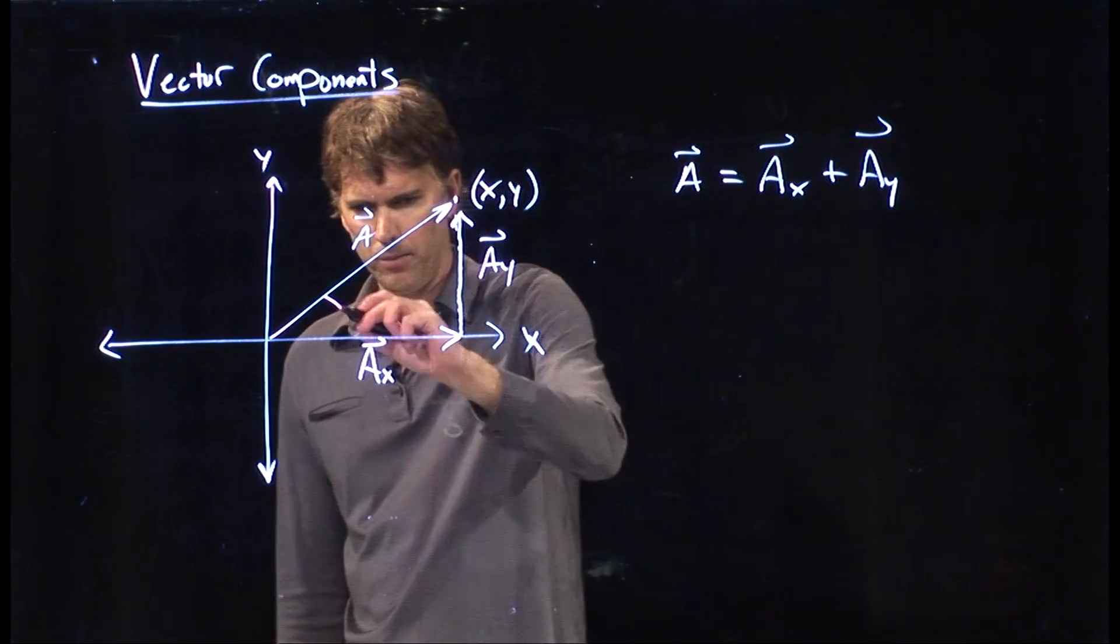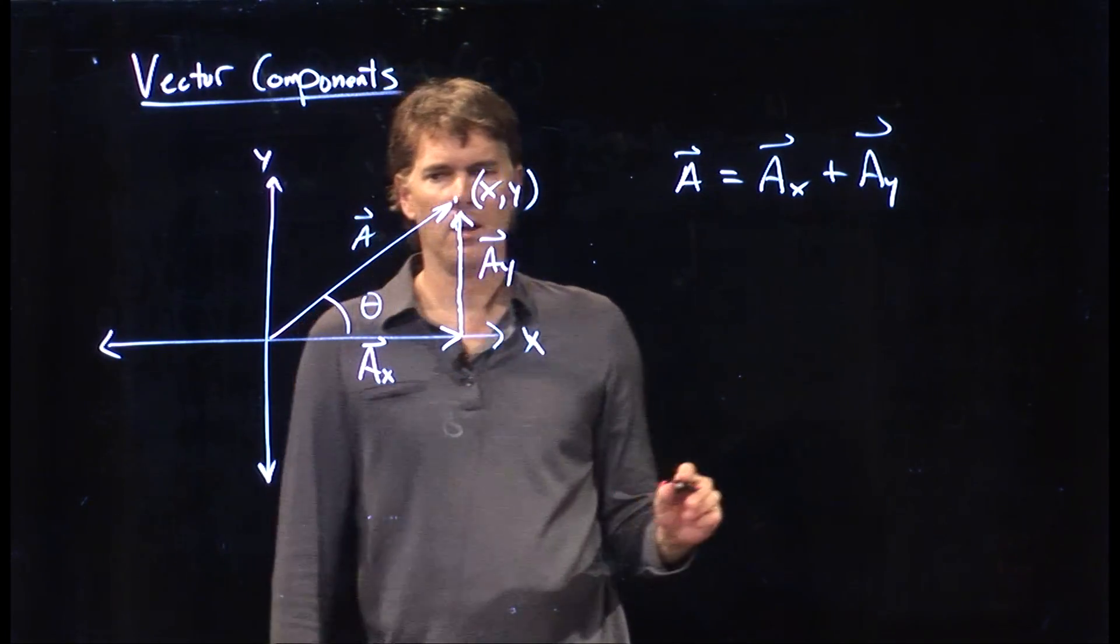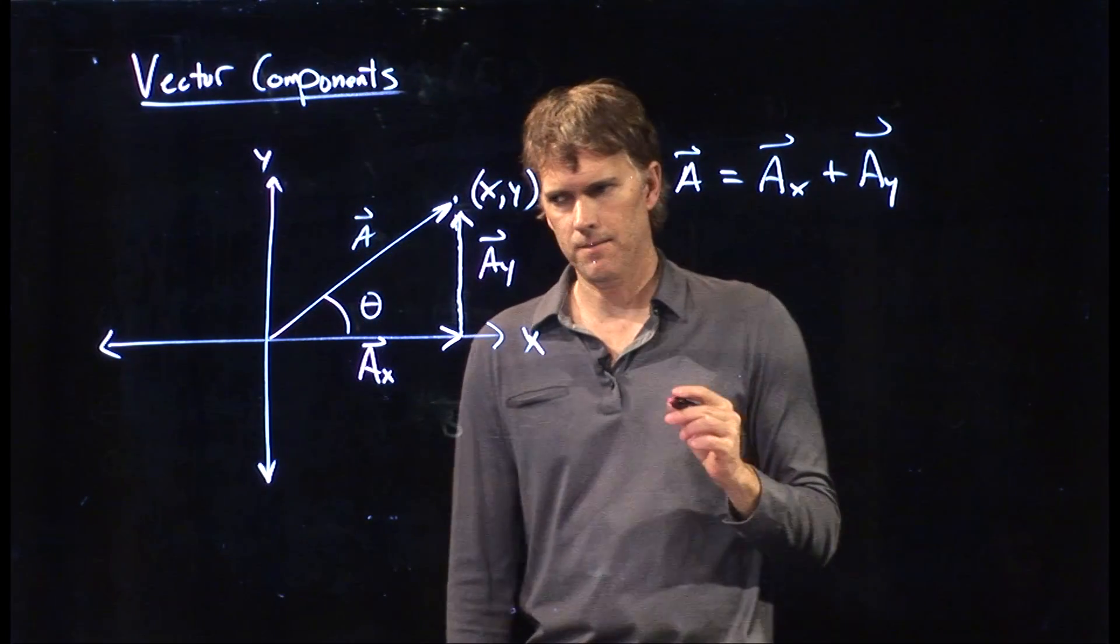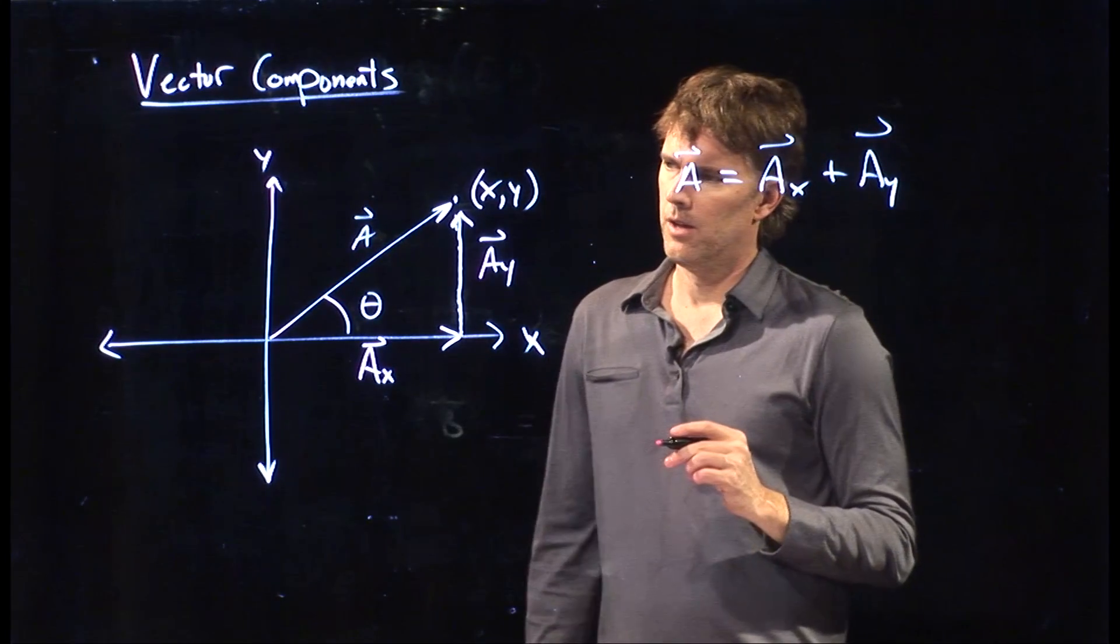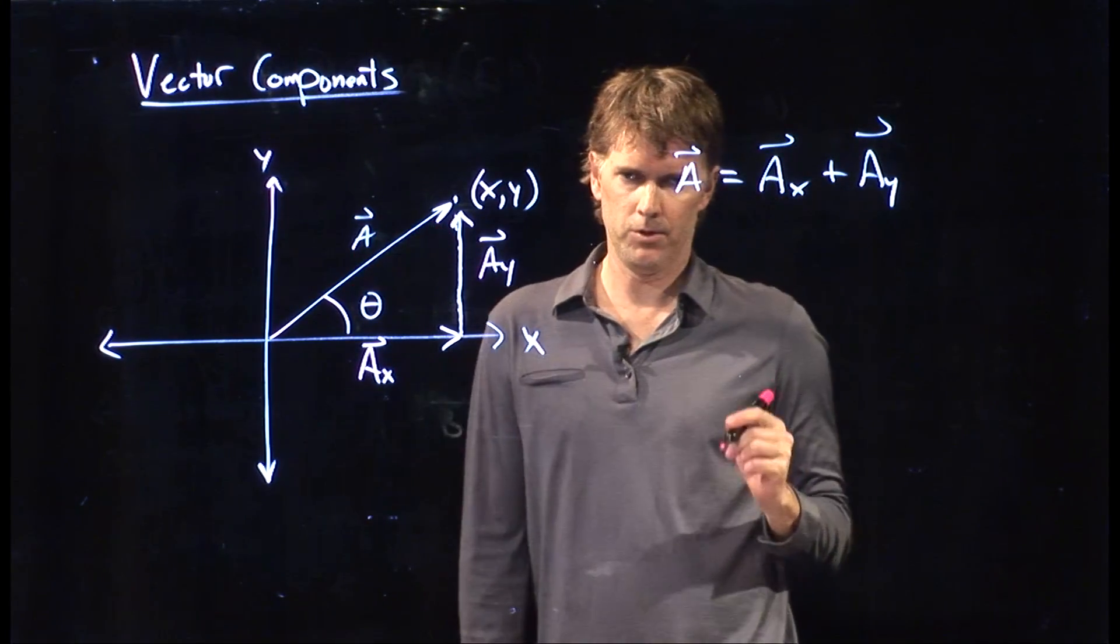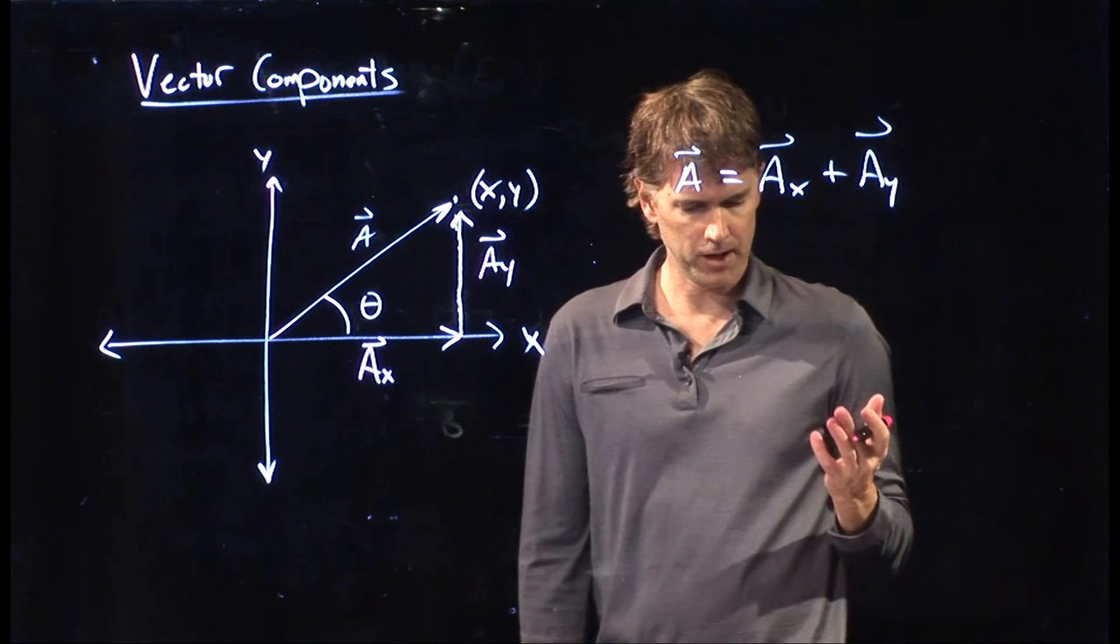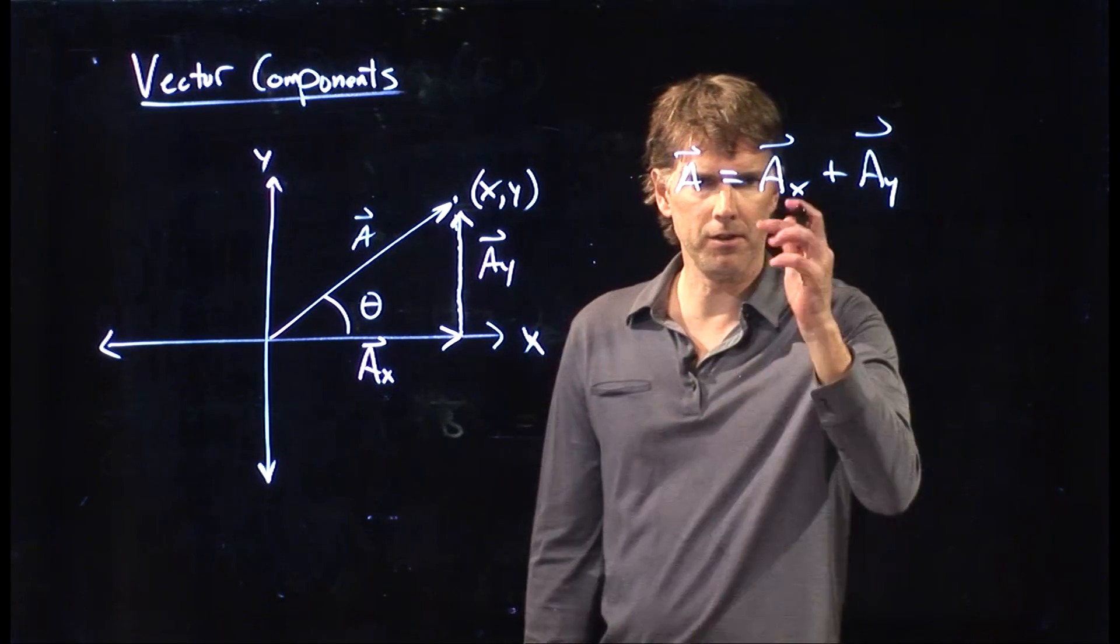But we also know a little bit about polar coordinates now. So if that is angle theta and the hypotenuse is the magnitude of the vector a, which is just a, in this case without the arrow, what can we say about these components?